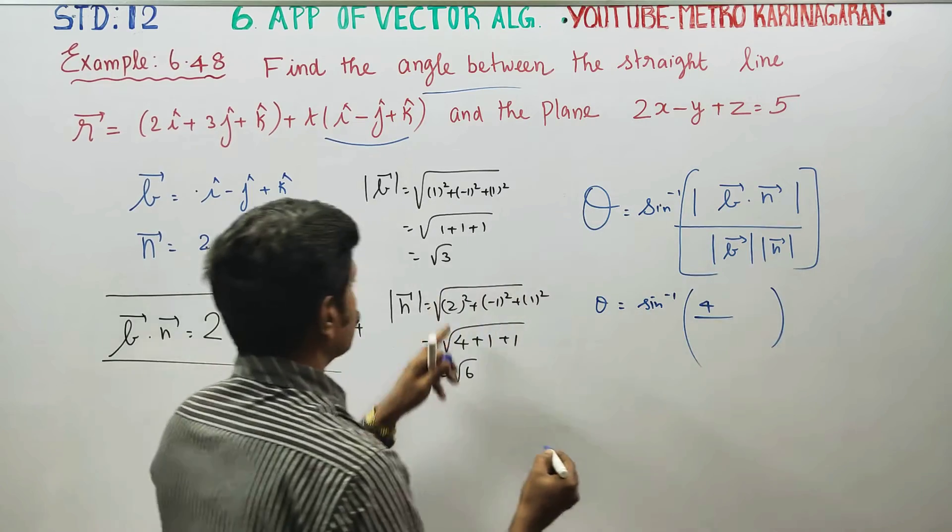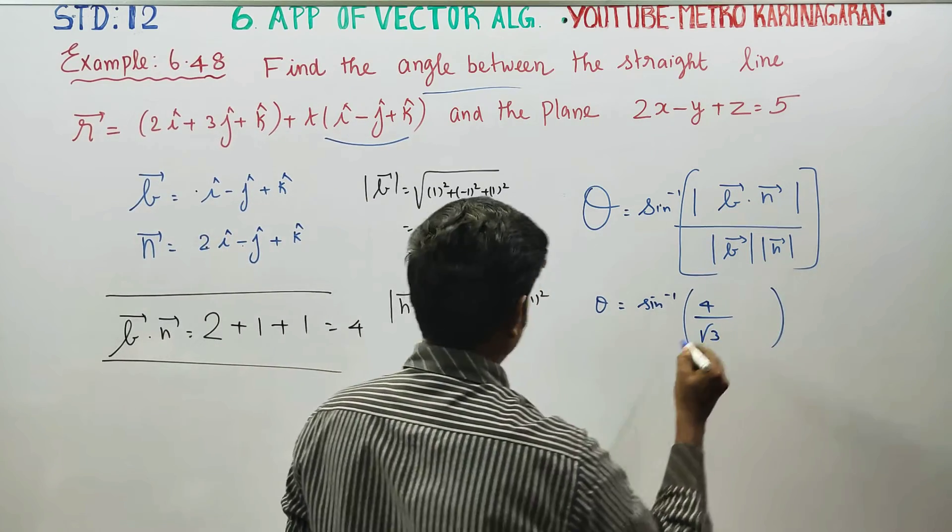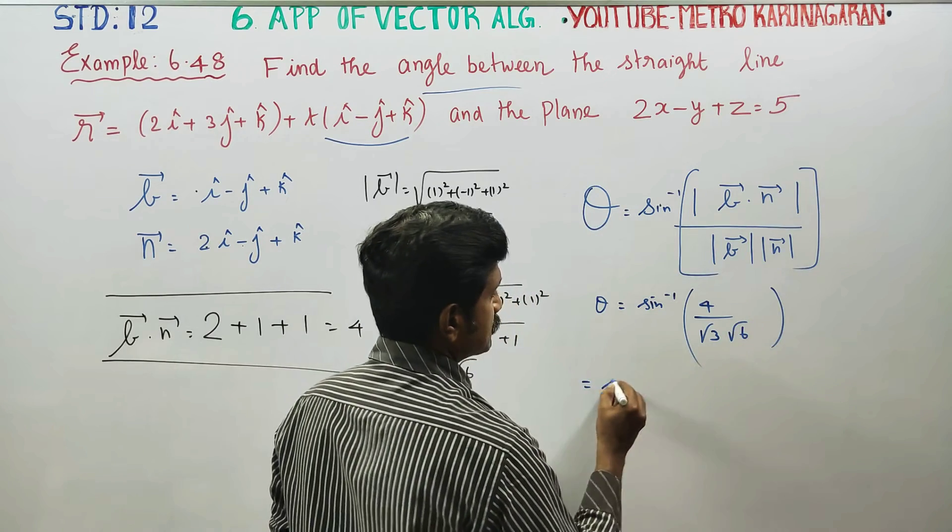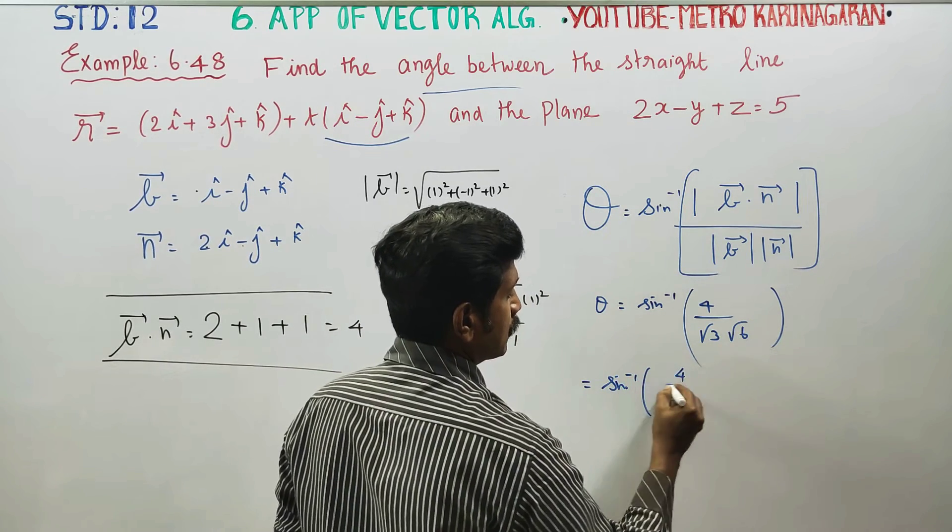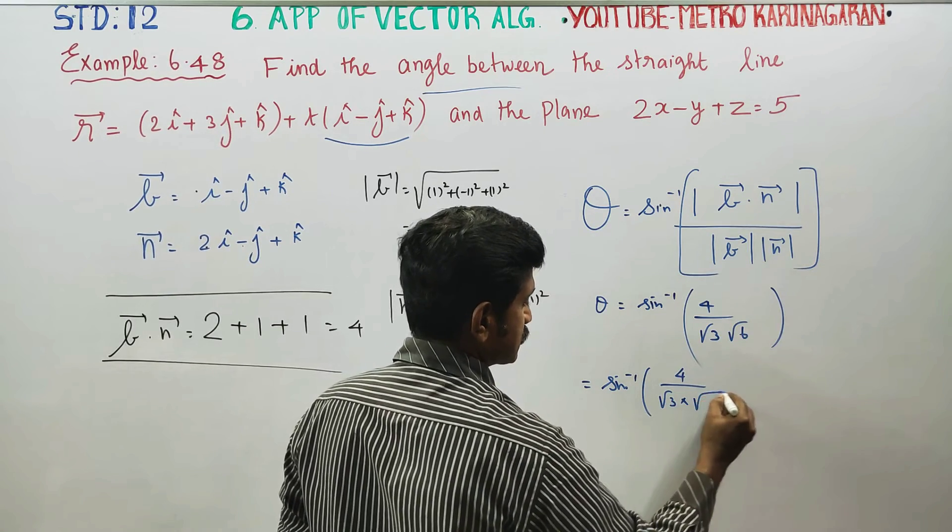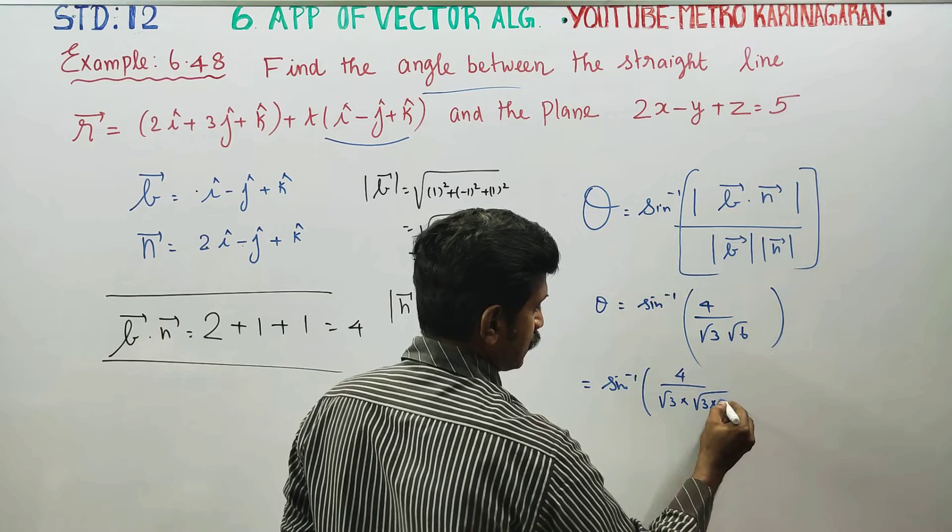By magnitude of b vector, this is root 3. By root 3, this is root 6. Sin inverse of 4, this is root 3. 6 can be written as root 3 into 2.